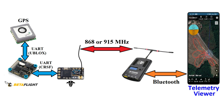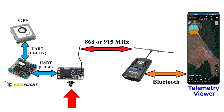You must also have the Telemetry Viewer app installed on your phone. This app is free and you can download it from the Google Play Store. Now, several configurations must be done at the level of the flight controller, Crossfire receiver, Crossfire transmitter, and smartphone. In what follows I will present all of these steps.